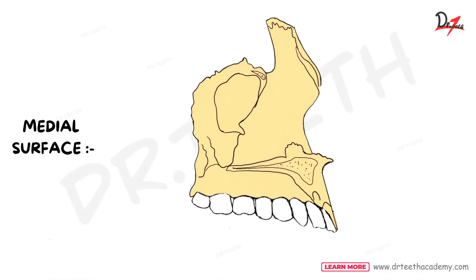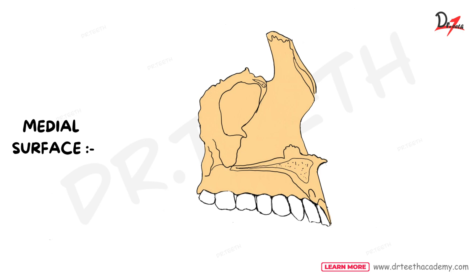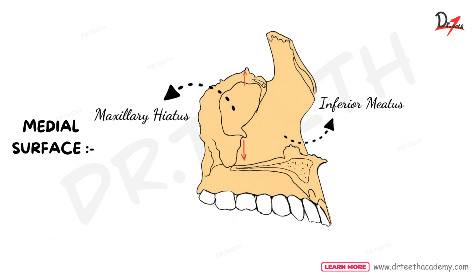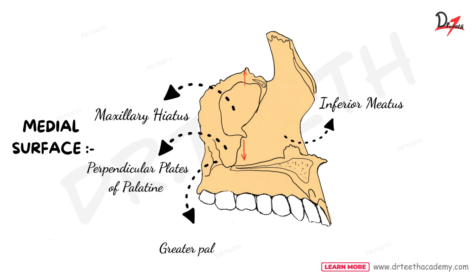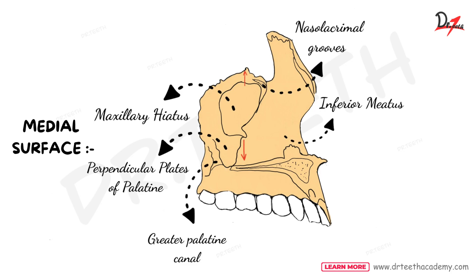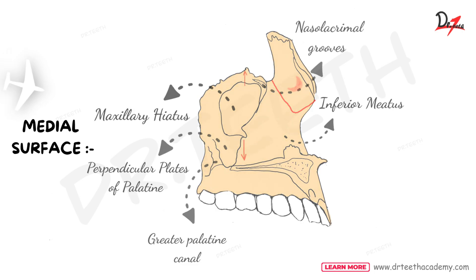Last is the medial or the nasal surface which is a part of the lateral wall of the nose. Posterior superiorly, it displays the maxillary hiatus. Above the hiatus, air sinuses are present. Below the hiatus, part of the inferior meatus is present. Behind the hiatus, the surface articulates with the perpendicular plate of palatine bone and encloses greater and lesser palatine canals. In front of the hiatus, nasolacrimal groove is present. Moving more anteriorly, an oblique line forms a conchal crest and above this crest, a shallow depression is seen which forms part of the atrium of the middle meatus of the nose.